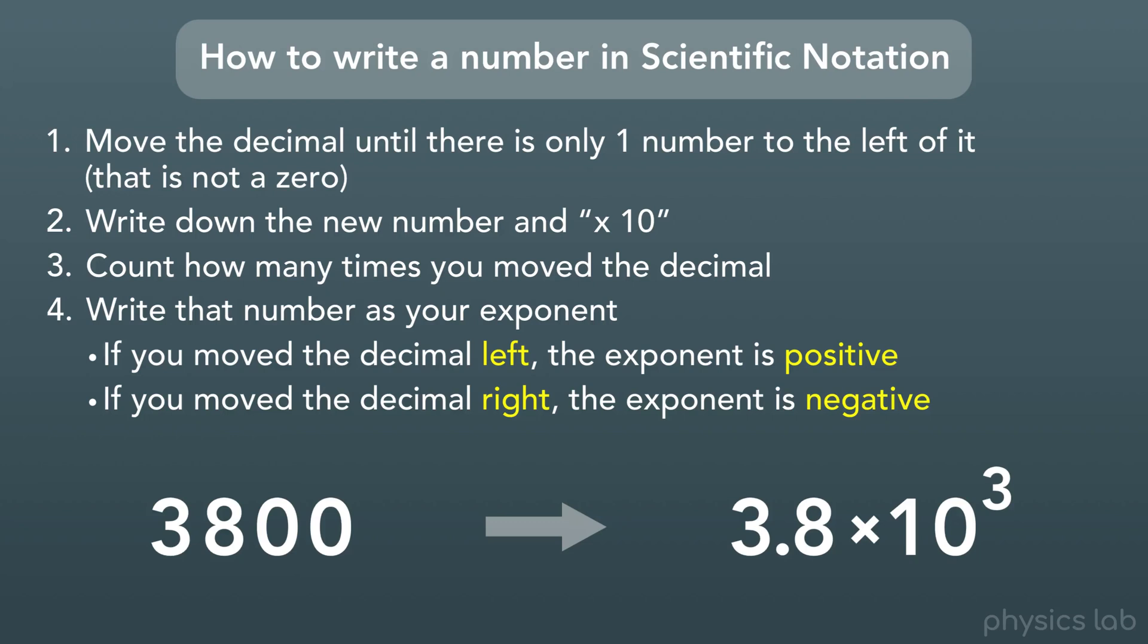So we took a number, 3,800, and we rewrote it using scientific notation. 3.8 times 10 to the third.